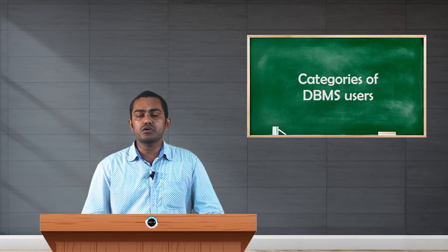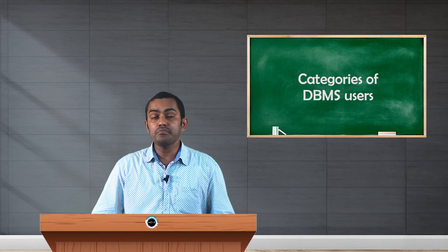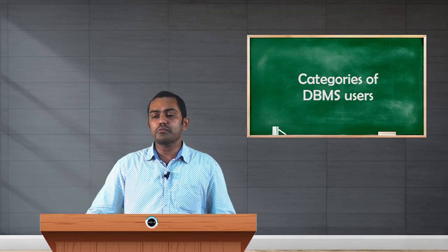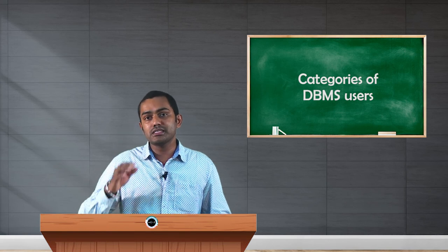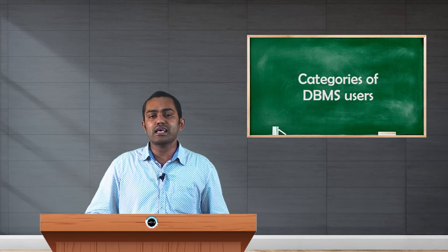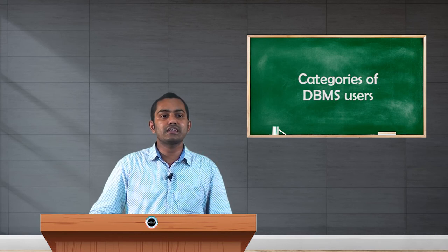Before the parametric end user uses the database, the transactions are carefully programmed and tested, then given to the parametric end user for their use. The third category is sophisticated end users. Engineers, scientists, and business analysts who thoroughly familiarize themselves with the facilities of the DBMS fall under this category, so as to implement their applications to meet complex requirements. They are familiar with how to access data and how to solve complex relationships, so these users are classified as sophisticated end users.